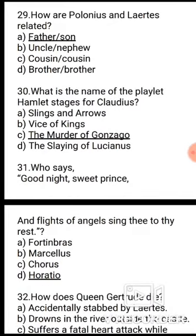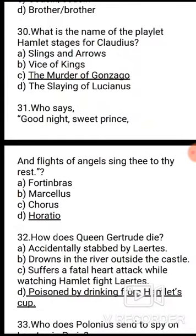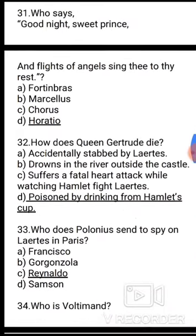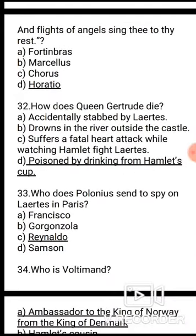Question 31: Who says 'Good night, sweet prince, and flights of angels sing thee to thy rest'? The correct answer is option D, Horatio. Question 32: How does Queen Gertrude die? The correct answer is option D — poisoned by drinking from Hamlet's cup. Question 33: Who does Polonius send to spy on Laertes in Paris? The correct answer is option C, Reynaldo.